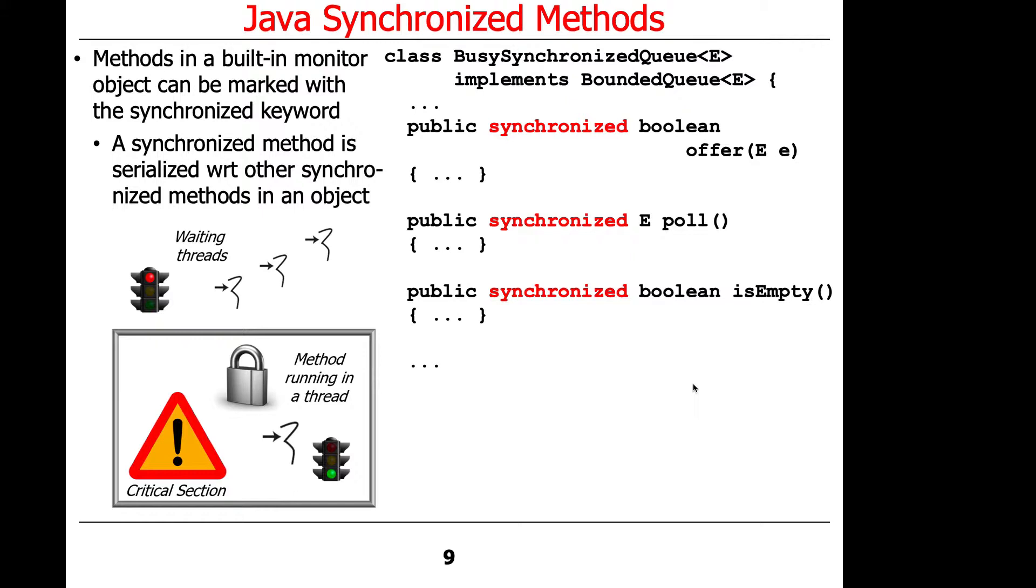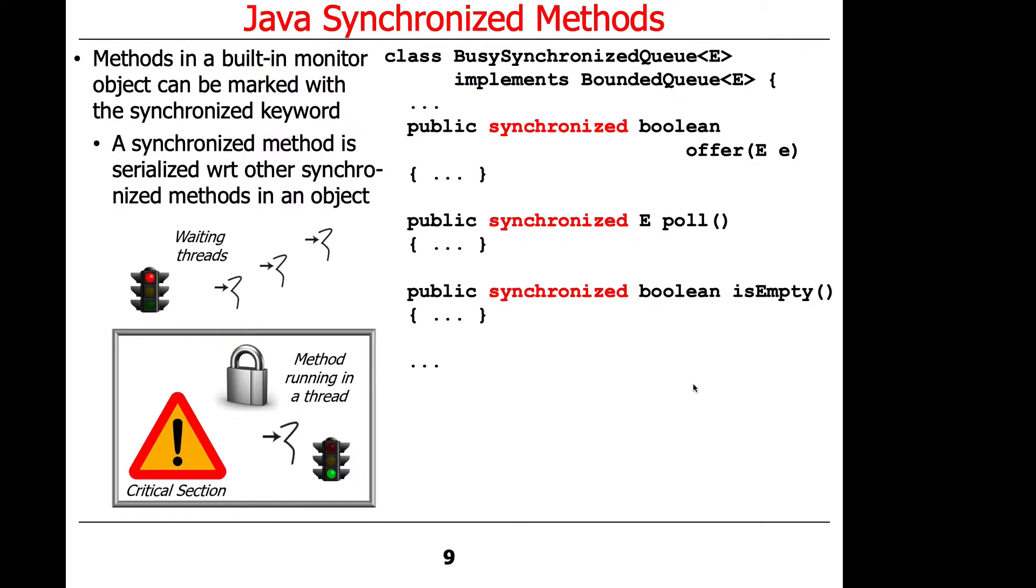So we have a bunch of threads that are trying to get access to the critical section of an object in an instance of a busy synchronized queue, and only one of those synchronized methods can be in here at a time. So a pretty straightforward idea.